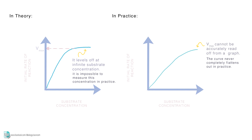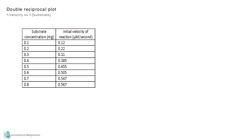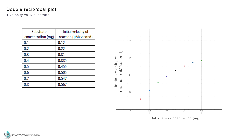So, in practice, a double reciprocal plot is needed to find the accurate Vmax and Km. It is done by plotting 1 over velocity against 1 over substrate concentration. For example, this is the data you have. When you use them to plot a graph, it should look like this. Notice that the graph has not levelled off even at the higher substrate concentration, so it is not possible to know the Vmax and Km by using this graph.